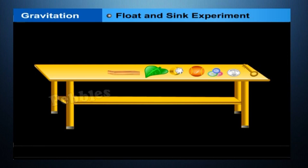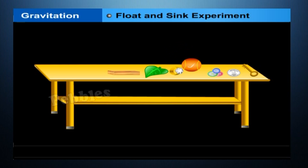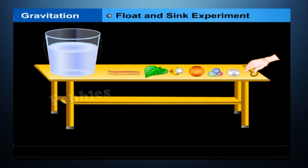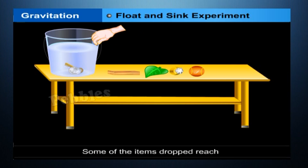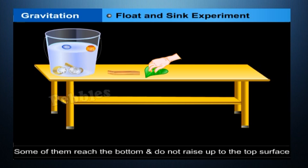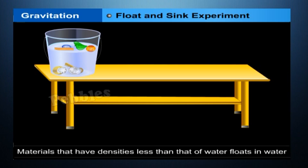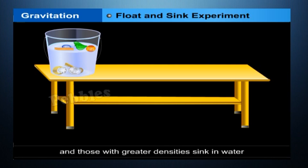Float and sink experiment: collect different substances such as an iron nail, ring, plastic buttons, coin, wooden chunk, leaf, etc., and put them one after another in a glass or bucket of water. Observe and record whether each substance floats or sinks. Some items reach the bottom and start floating; others reach the bottom and do not rise. Iron nail and ring sink, whereas wood and plastic float. Materials with densities less than that of water float, and those with greater densities sink in water.